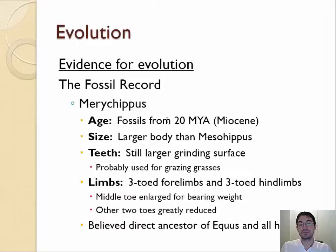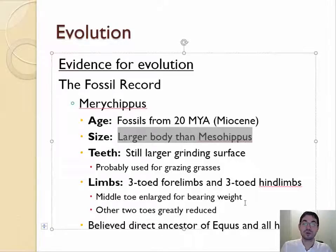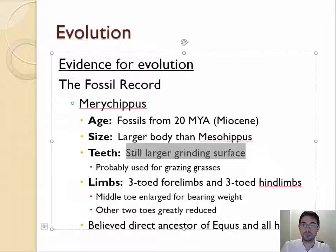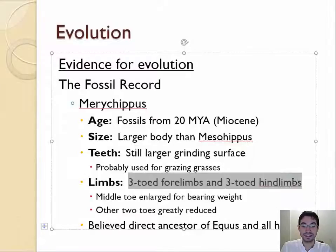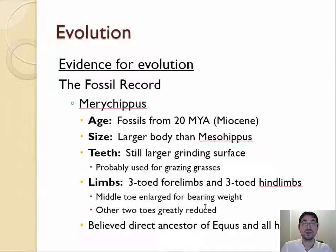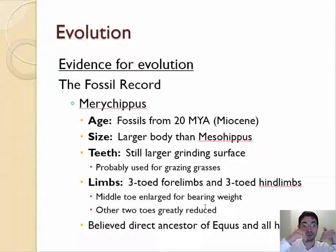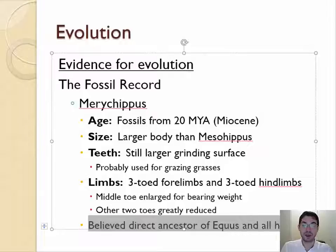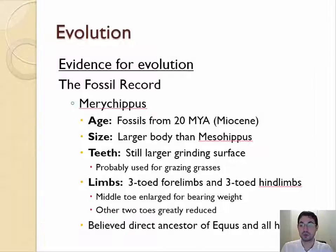Then 10 million years later we get to Merihippus, which was even larger than the one before, with even larger teeth now big enough that they probably mostly ate grasses. They still had three toes, but the middle toe was getting bigger and bigger, and was probably the only toe to touch the ground. This is believed to be a direct ancestor of all modern horses.